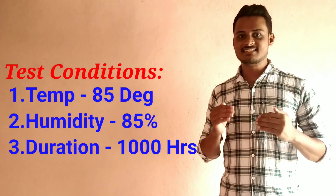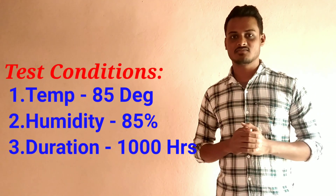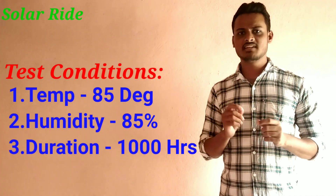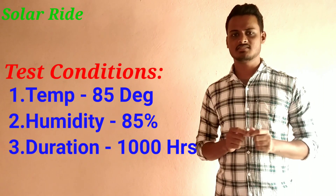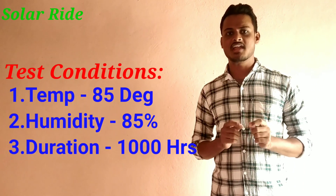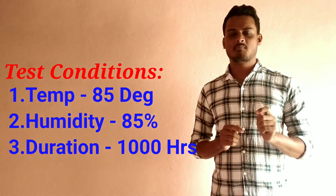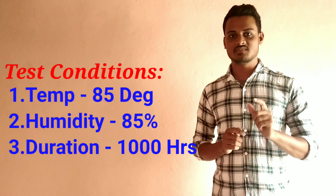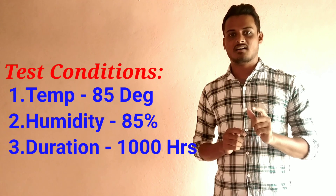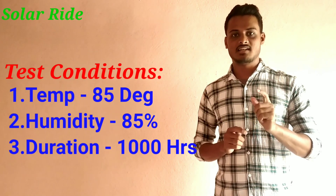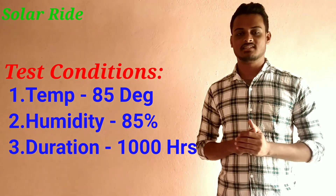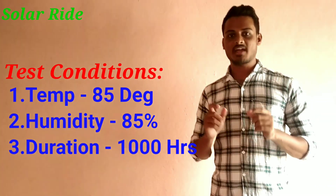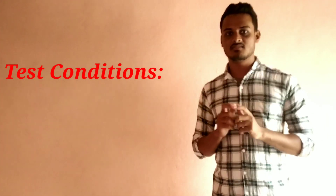In this DH test, we apply 85 degrees Celsius temperature and 85% RH. RH means Relative Humidity. These two are the main parameters applied to the module.